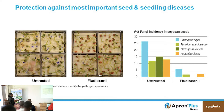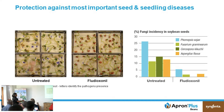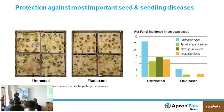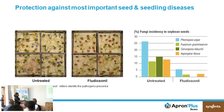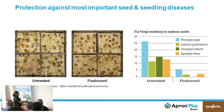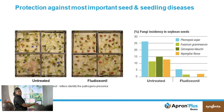This is the untreated, showing the incidence of disease. In the untreated you have up to 25% Phomopsis. Then when you look at Fusarium, in the fludioxonil treatment it's less than in the untreated. Then when you go to Cercospora, here you have zero compared to almost 15% in the untreated, meaning there was a hundred percent control.